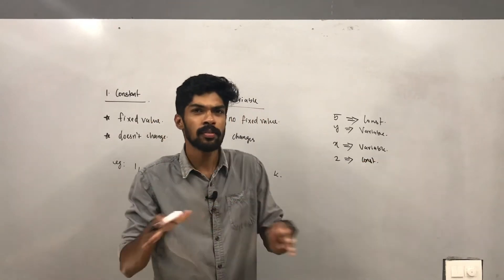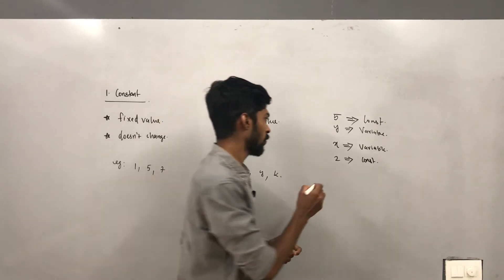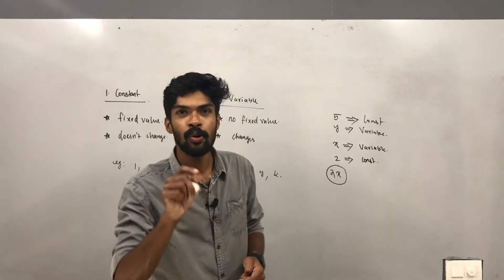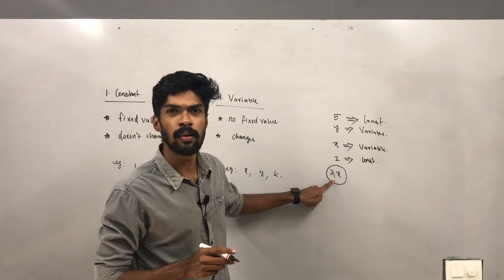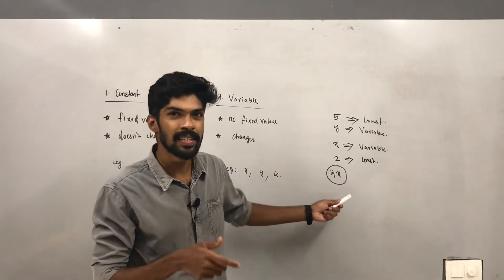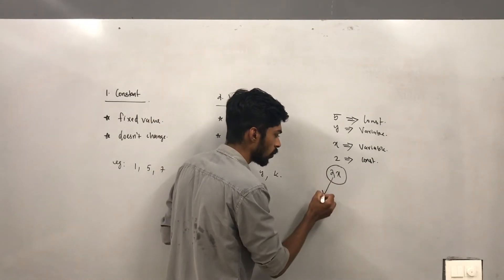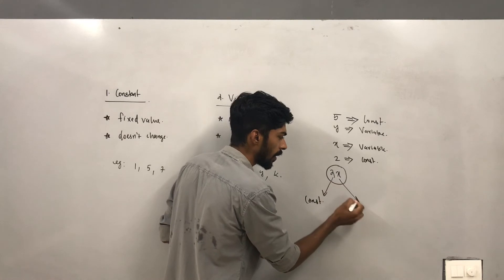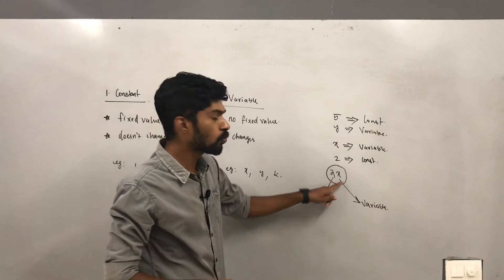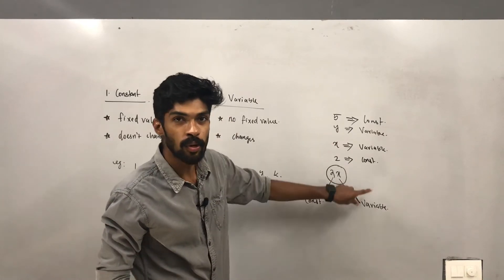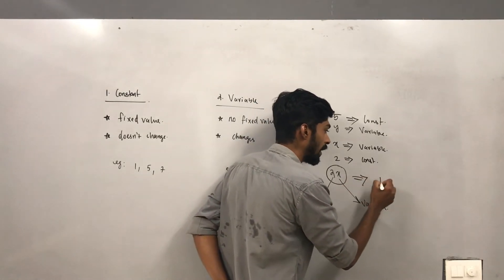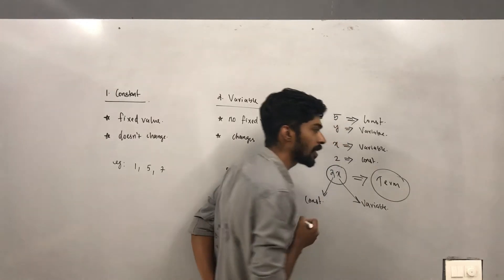Now, what about 2x? Is 2x a variable? No. Is it a constant? No. It is a combination of a constant — 2 is a constant — and x is a variable. This combination of a constant and a variable is called a term.